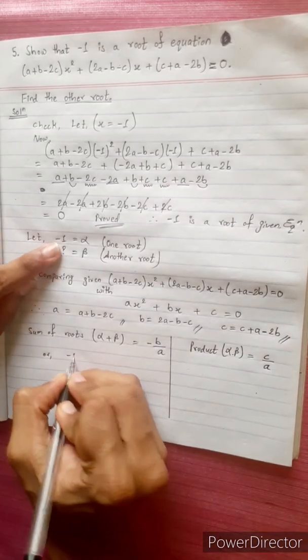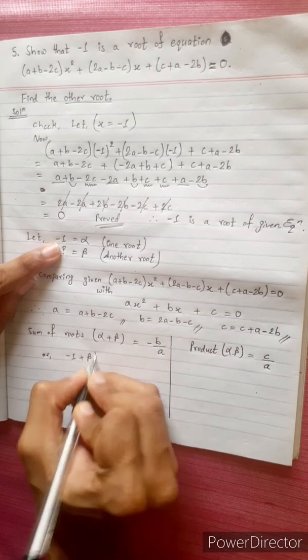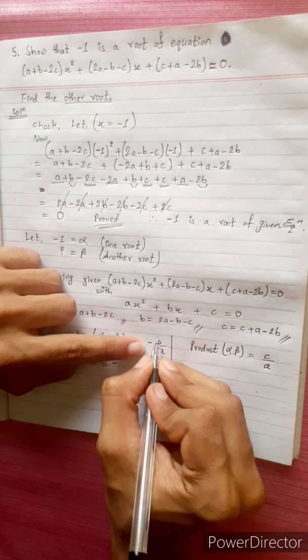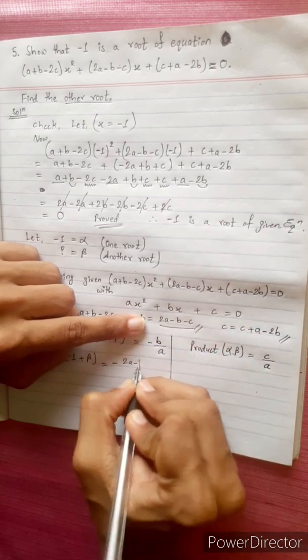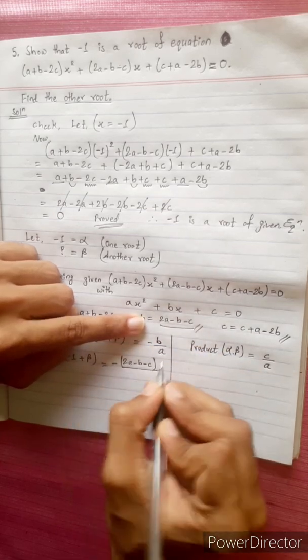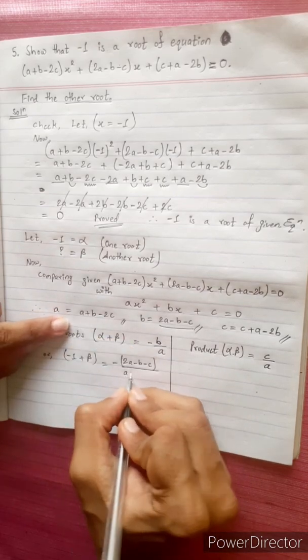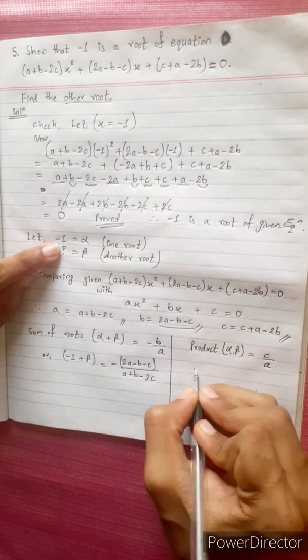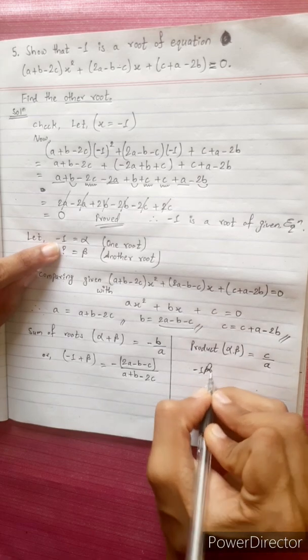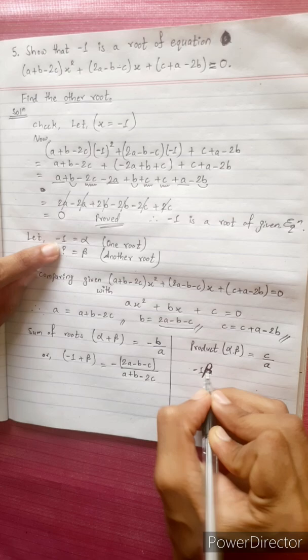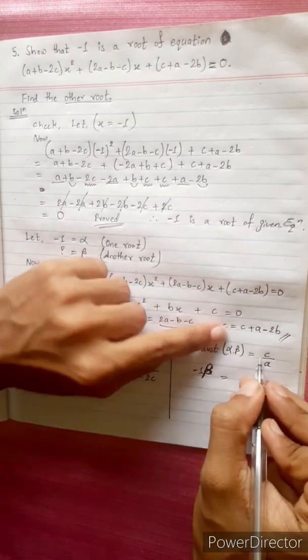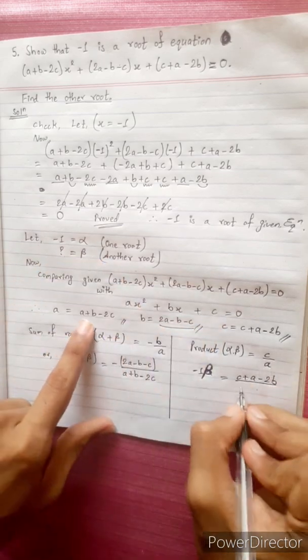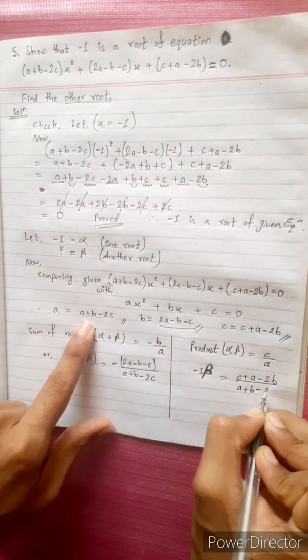Alpha ka value katsha minus 1. Minus 1 plus beta ka value katshae na. Ani yi find var nuk warne. Oh. Equals to. Minus. Beta. Yo b voneko. Yo. 2a minus b minus c. Divide by A voneko yo. A plus b minus 2c. Alpha voneko minus 1. Minus 1 into beta. Sorry beta. Minus 1 into beta. Equals to c voneko yo. C plus a minus 2b. Divide by A voneko yo. A plus b minus 2c.